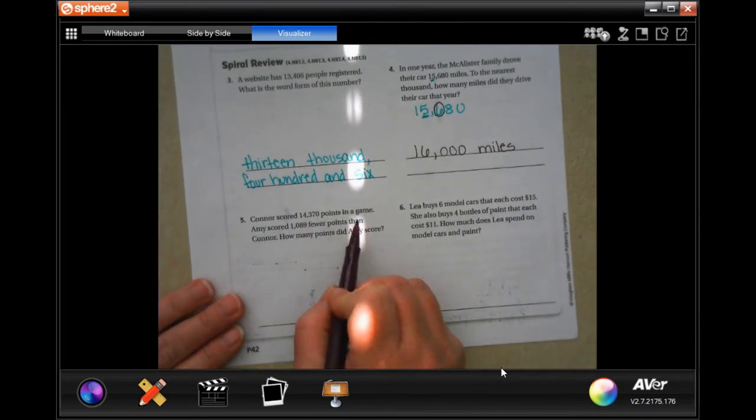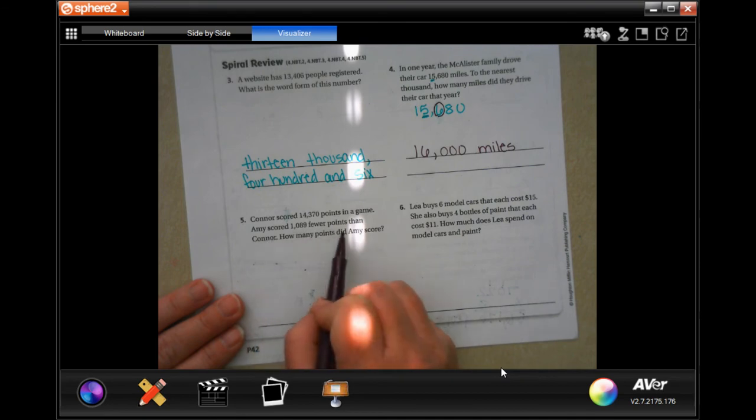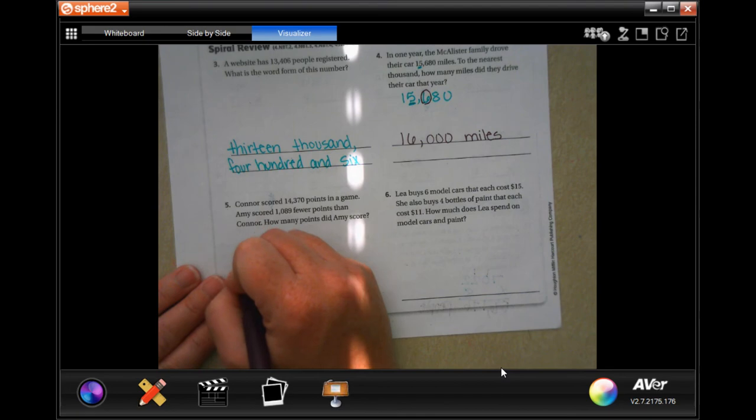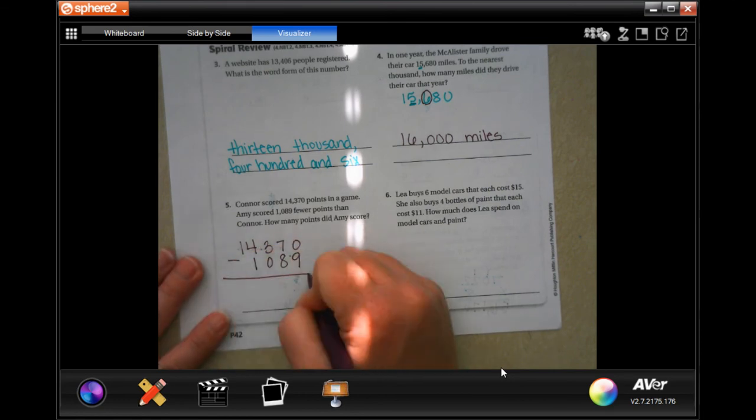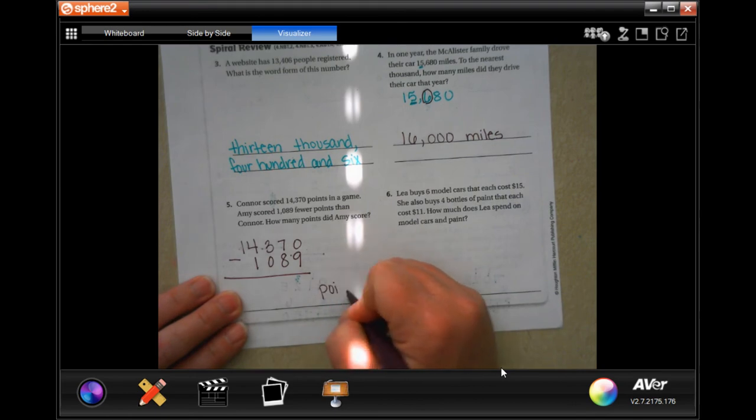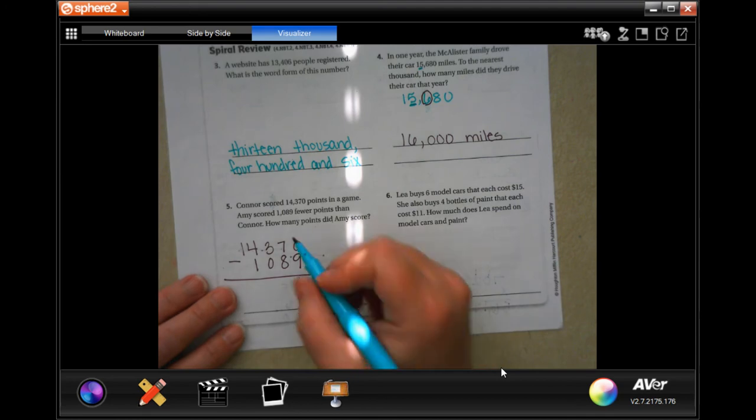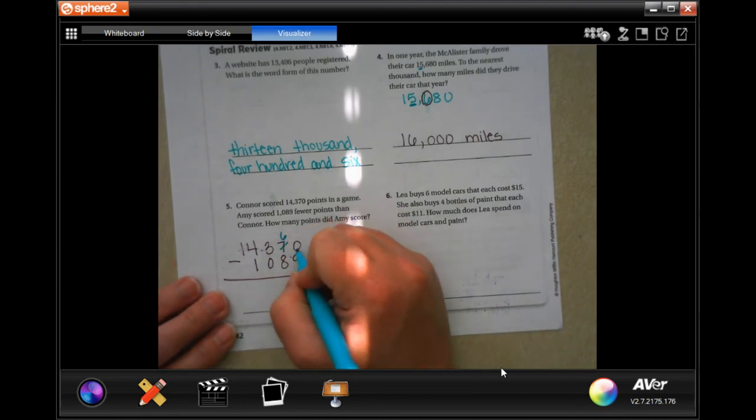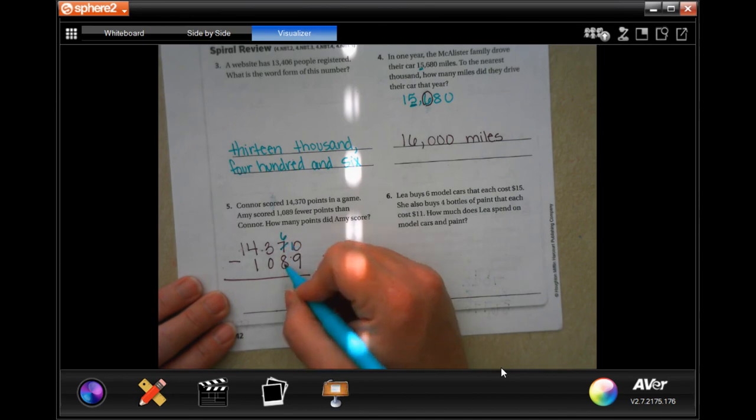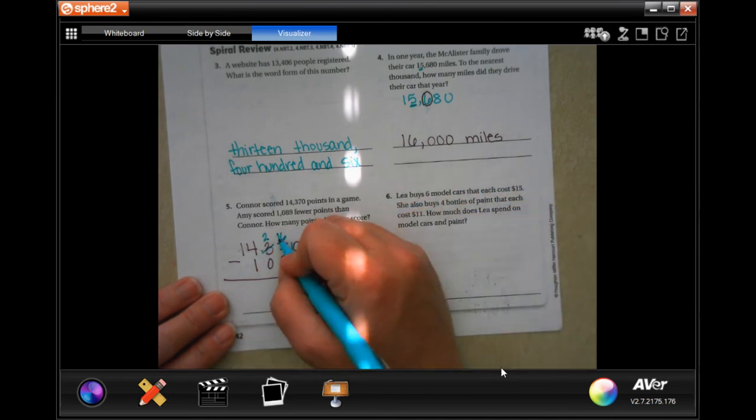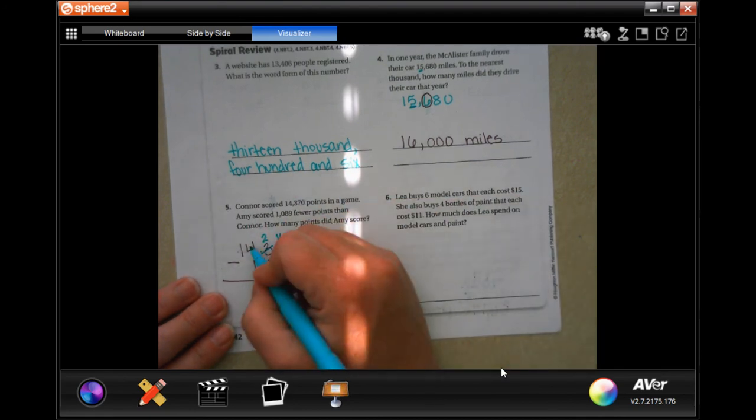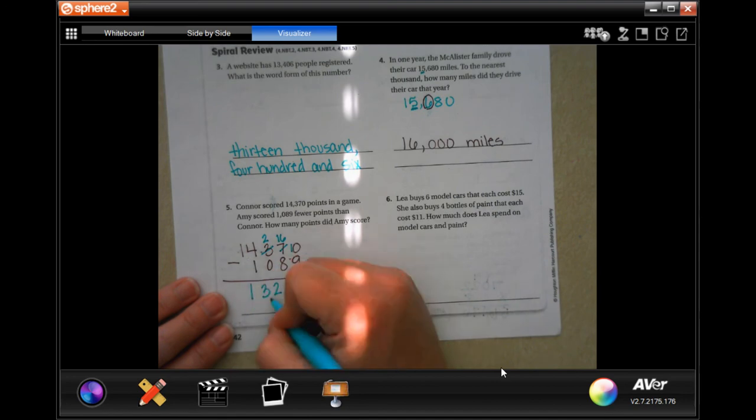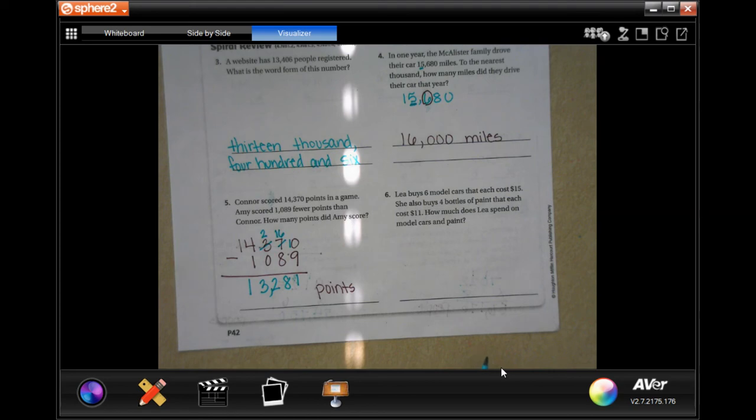Connor scored 14,370 points in a game. Amy scored 1,089 fewer points than Connor. How many points did Amy score? Well, to find the difference, we need to subtract. And it's going to be in points will be our label. All right. Zero cannot take away nine. 10 take away nine is one. Six cannot take away eight. Makes that a 16. 16 take away eight is eight. Two take away zero, two, four take away one, three, and one take away nothing. 13,281 points.